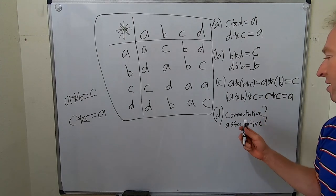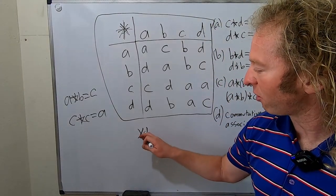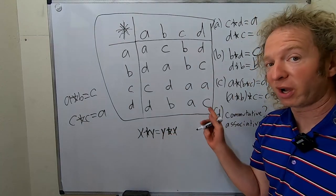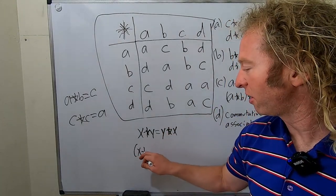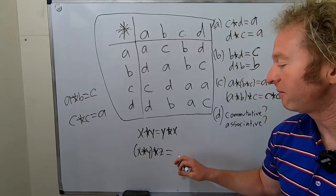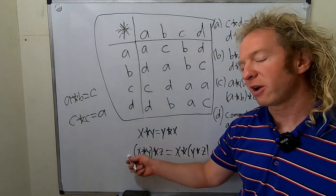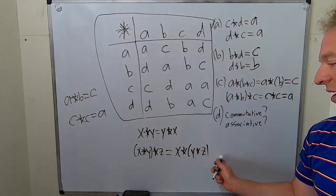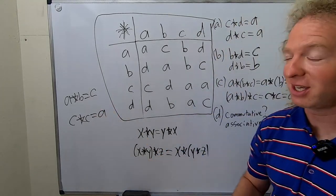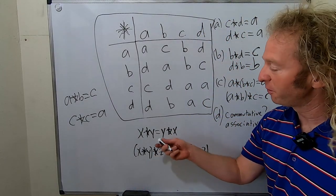Now let's answer whether the operation is commutative or associative. Commutative means x star y equals y star x for all x and y. Associative means (x star y) star z equals x star (y star z) for all elements in the set. Both conditions must hold for every possible combination of elements.